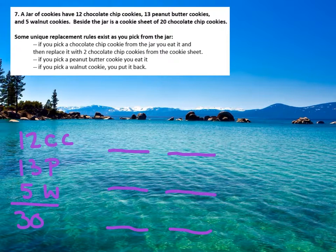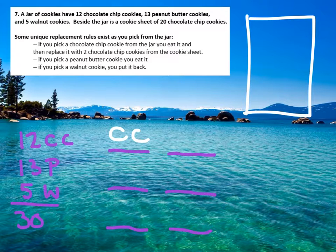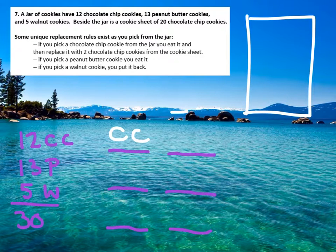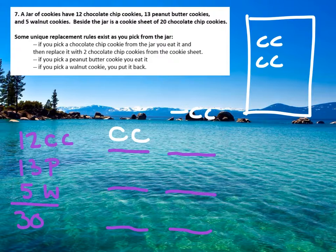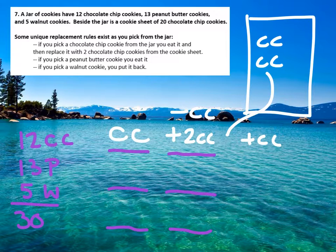In the first pick, if you choose a chocolate chip, what you do is you eat it — so that's one less chocolate chip, you're down one. But then it says from the tray over here, you're going to add 2 more chocolate chips. So when you're said and done, you basically added a chocolate chip to your account.